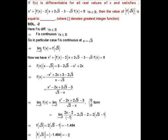The next question: Here f is a function which is differentiable for all real numbers and satisfies the equation x² + f(x) - 2x + 2√3 - 3 - √3·f(x) = 0 for all x. We have to find the greatest integer function of f(√3).